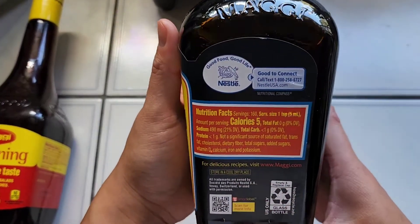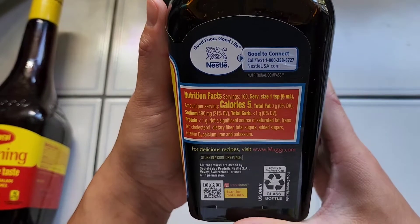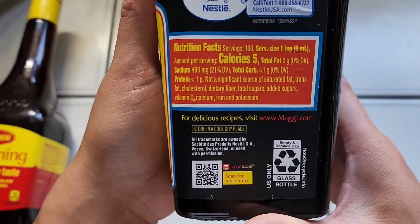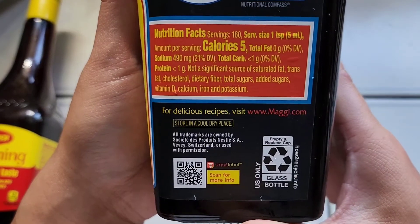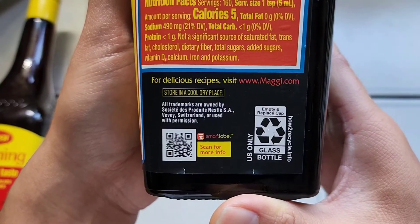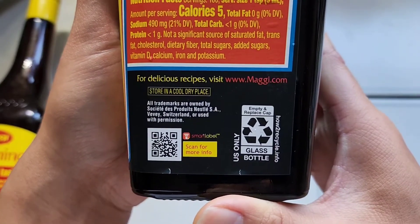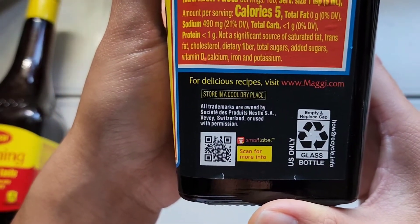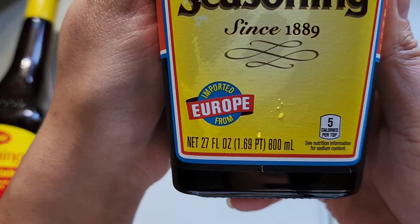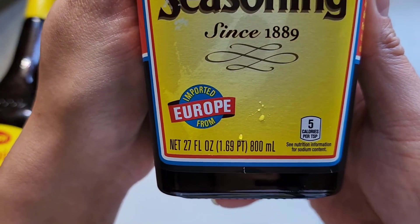So here's the bottle. Nestle. Nutrition facts, you can see here. Store in a cool, dry place. Empty and replace cap. And then you can recycle this in glass. U.S. only. You can scan this for more info. This is imported from Europe.